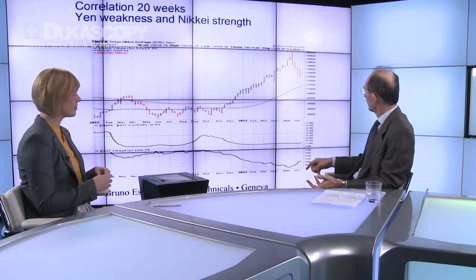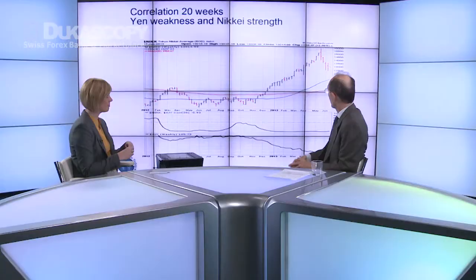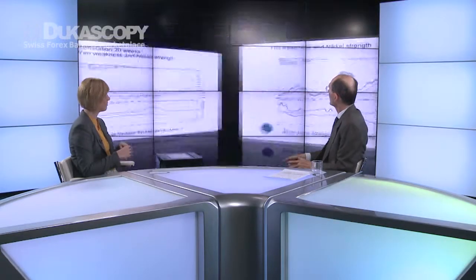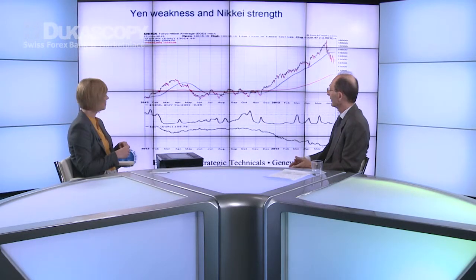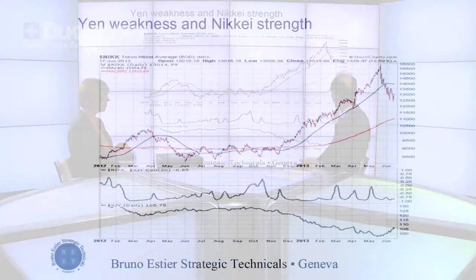This correlation since the beginning of 2013 has been relatively stable at minus one. However, moving to the next chart which is a daily correlation, you will see on the right side that within the period where the long-term correlation was always minus one, you have some spikes going back to zero. That means during small periods of time there is no more correlation between the two asset classes — the Nikkei and the yen weakness.